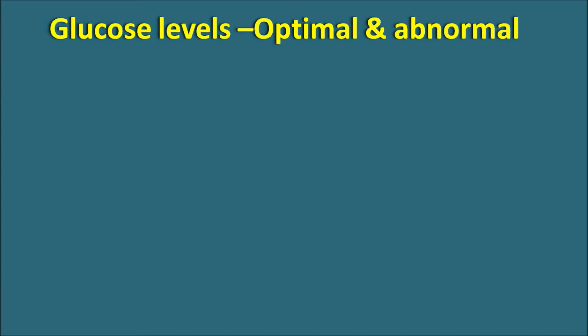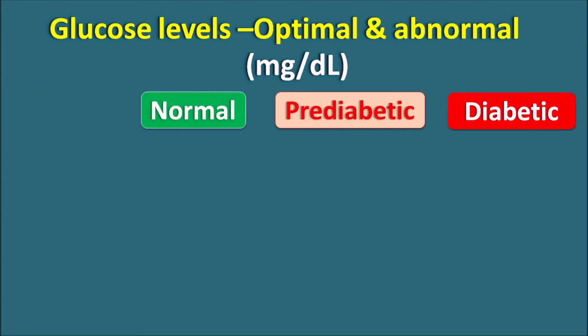Now let us see what are the glucose levels, optimal and abnormal levels. Glucose levels can be represented with the units mg per deciliter. Sometimes they can also be represented as millimoles per liter, but milligram per deciliter is one of the widely used expressions for glucose levels. According to the glucose levels, the health condition of the patient can be classified into three categories: normal, pre-diabetic, as well as diabetic.